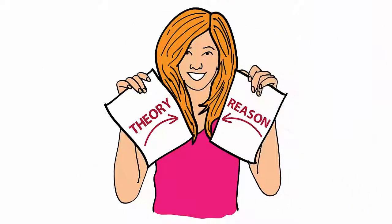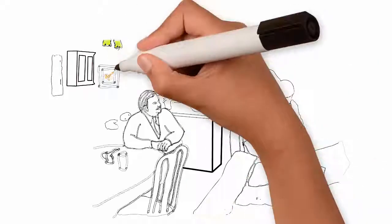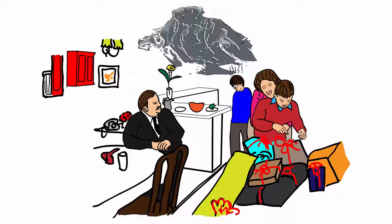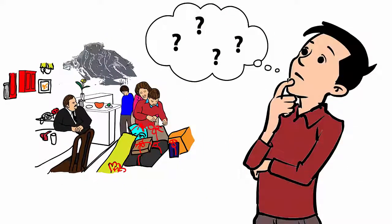This theory gives us a possible reason. What if the Dursleys were only so mean and awful to Harry because they were being cursed by their proximity to him? And why might this make a difference?